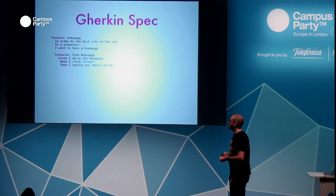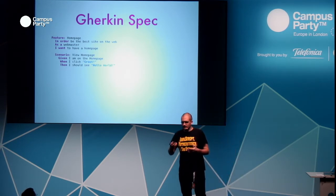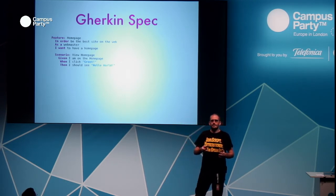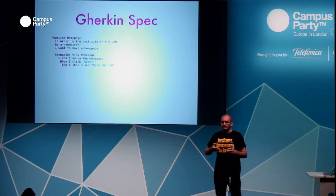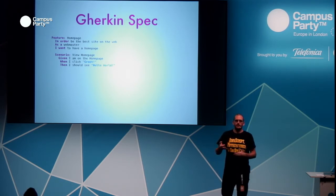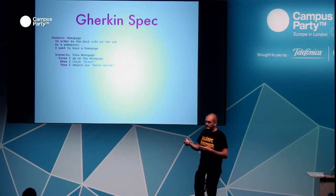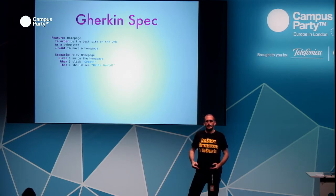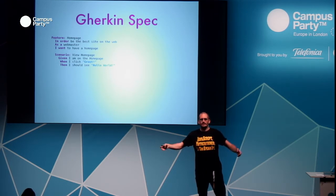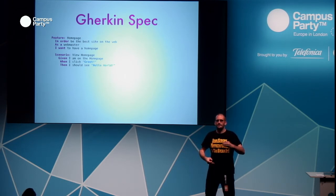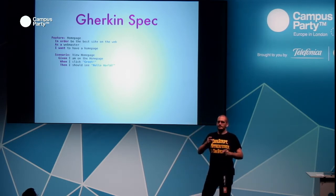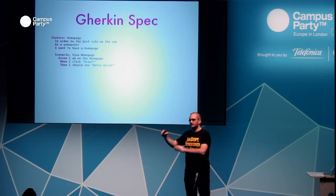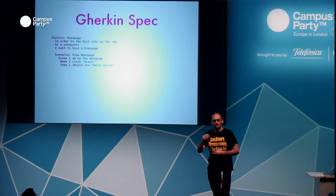This is done through the Gherkin syntax — a syntax designed to specify business logic in a way that is easy to understand and readable. The beauty of this syntax is that it's actually readable by business people. You can write it out, give it to a business person and ask: is this what you want me to build? They can sign it off, and you avoid the horrible cycle of them saying they want one thing, you build it, you take it back, and it's actually something else.